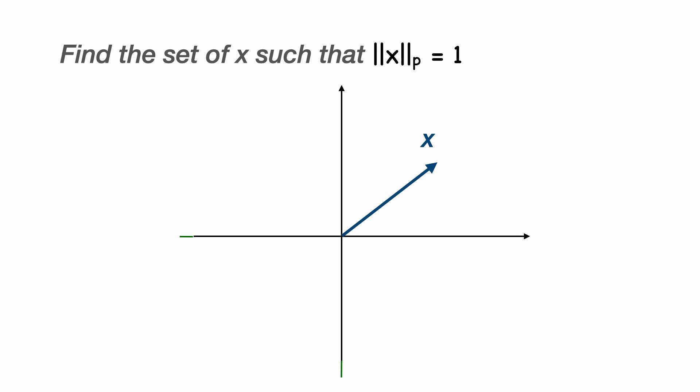So let's try and get a feel for the different Lp norms. We can visualize a set of vectors such that the Lp norm of each vector is equal to 1. We'll stick with two dimensions and we can do this for any value of p. Let's start with the L1 norm of x equal to 1.